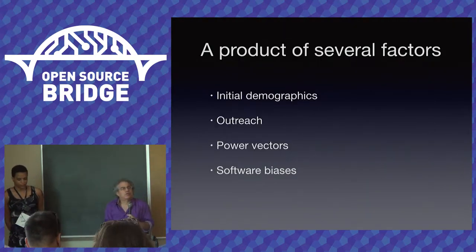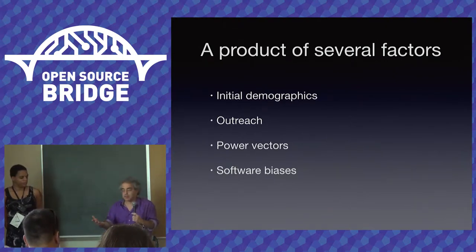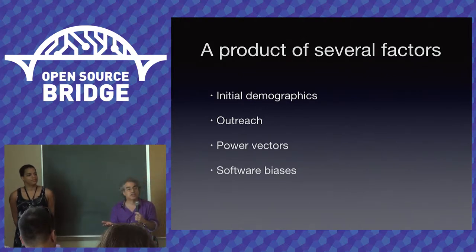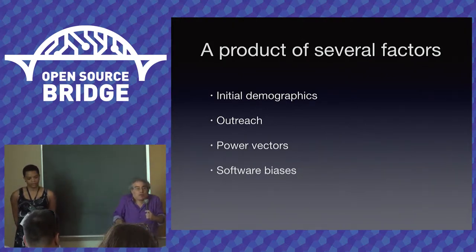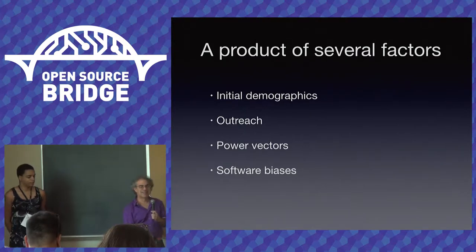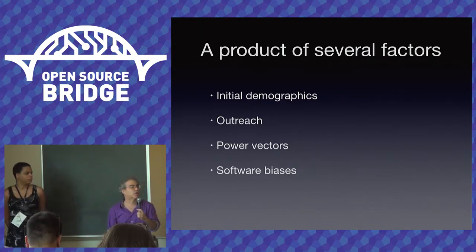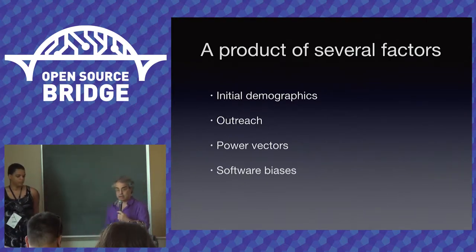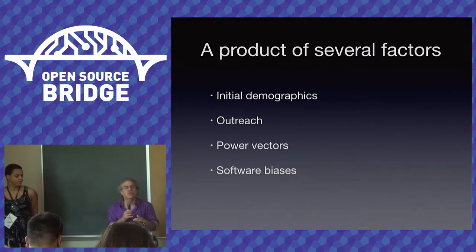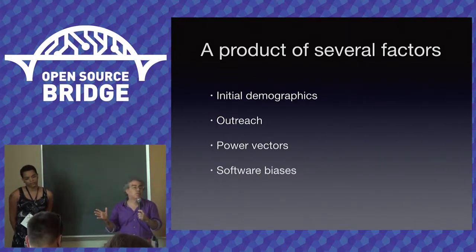The diversity on a site is really a product of a bunch of different factors. It starts with the initial demographics, the team that started it and the attention they pay to it, and then the outreach that they do. If the initial team is a bunch of techie white guys and they ask their friends, now you've got a very intense skew. And over time, the skews just become harder and harder to overcome. Quora is a great example — it started by targeting the techie elites of Silicon Valley, and five years later it's still a site for the techie elites of Silicon Valley. Then you've got the power vectors: who's making the decisions, who's profiting, who are the influentials on the site? If that's not representative, you may draw in some diverse people but they won't stay around.